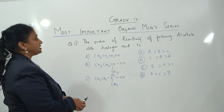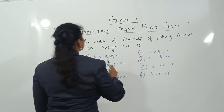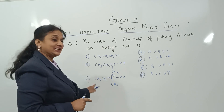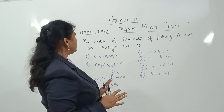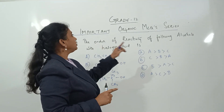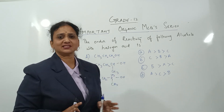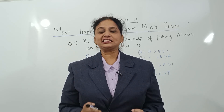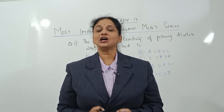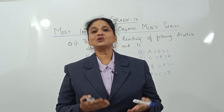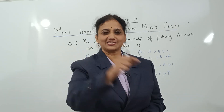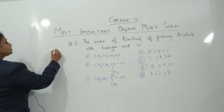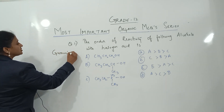The question says: the order of reactivity of the following alcohols with halogen acid is — and they have given a list of alcohols A, B, C. They're asking what is the order of reactivity of alcohols with halogen acids. This reaction — alcohol reacting with halogen acids — is nothing but the Grooves process, also called the Lucas reagent test.